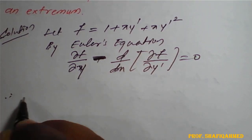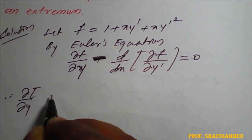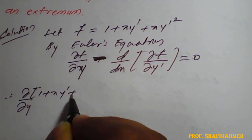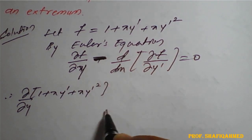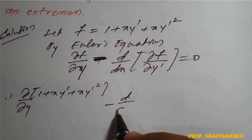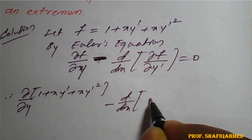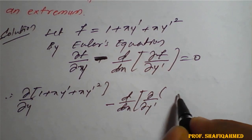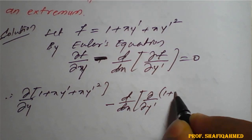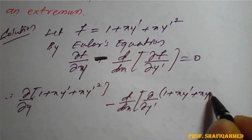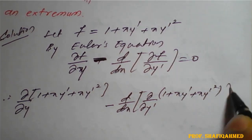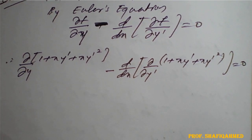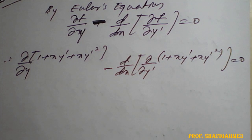Therefore, dou by dou y of (1 plus x y dash plus x y dash square) minus d by dx of dou by dou y dash of (1 plus x y dash plus x y dash square) equal to 0. Once we replace the values of f, we need to go for partial derivatives.